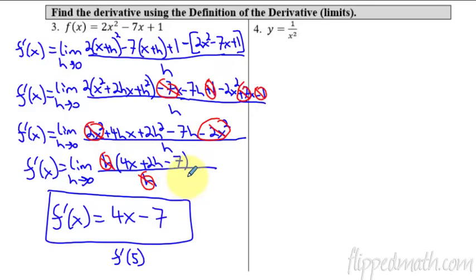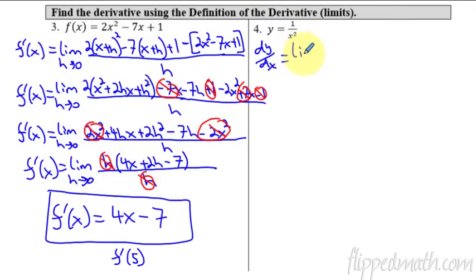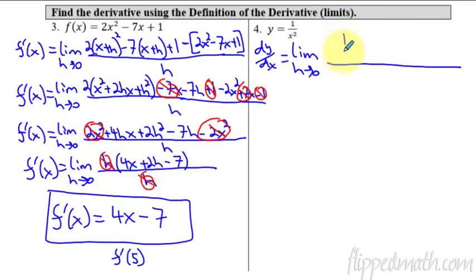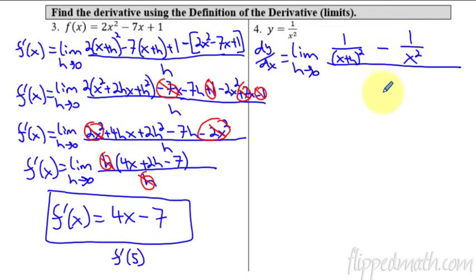Let's practice one more time. Here I have y, so the derivative will be written as dy/dx, just to practice Leibniz notation. We set it up the same way: limit as h approaches 0 of [f(x+h) − f(x)] / h. For f(x+h), I plug in x+h: so it's 1 over (x+h)², and then subtract f(x), which is 1 over x². All over h.